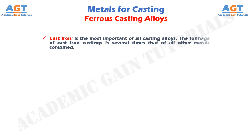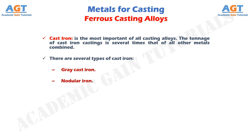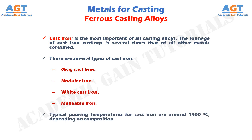The ferrous casting alloys. Cast iron is the most important of all casting alloys. The tonnage of cast iron castings is several times that of all other metals combined. There are several types of cast iron: grey cast iron, nodular iron, white cast iron, and malleable iron. Typical pouring temperatures for cast iron are around 1400 degrees Celsius, depending on composition.